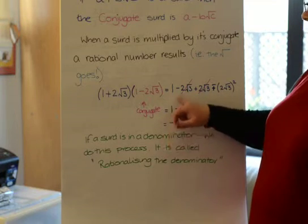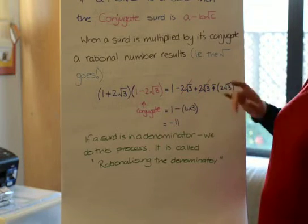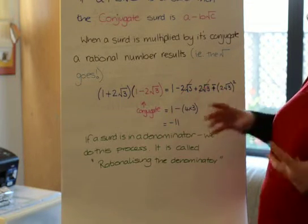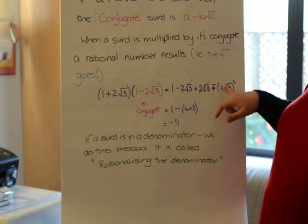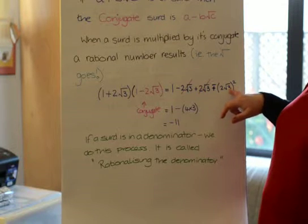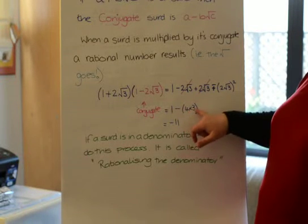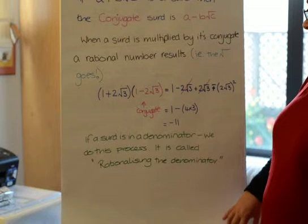So obviously the one goes. These cancel out, which is what you would expect because we're going to be left with no surds. And two root three. Now remember, we said you square the two and then square the three. So it becomes four times three, which is twelve. So that is minus eleven.